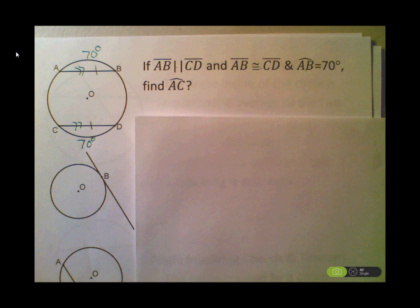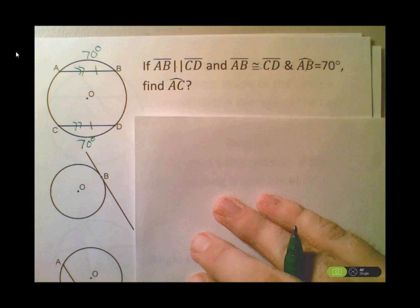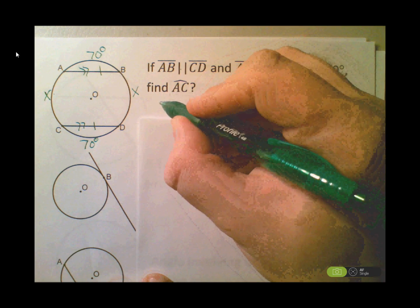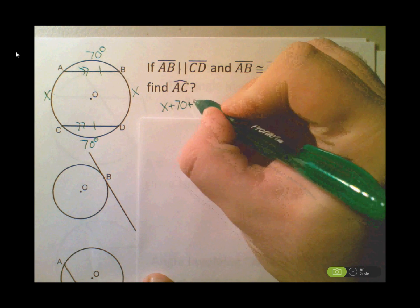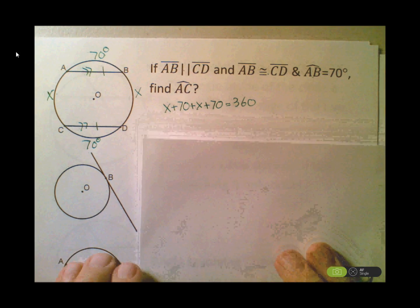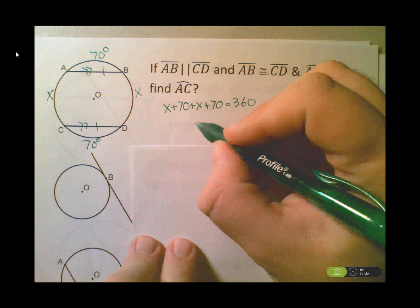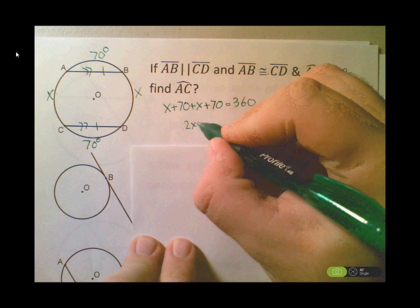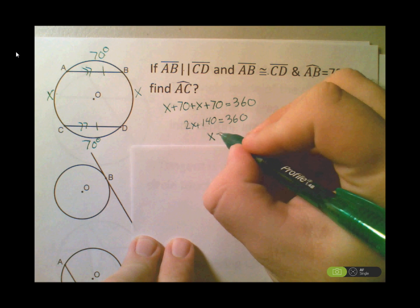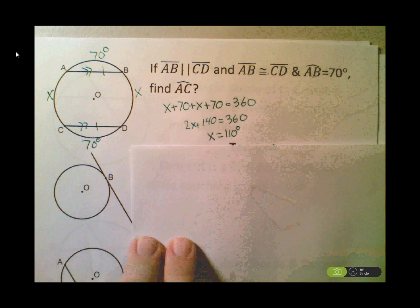If those arcs are both 70 degrees, I want to find arc AC, so I put x there. Because of the parallel lines, arc BD is also x. Adding up all arcs and setting equal to 360 degrees: 2x + 140 = 360, and x = 110 degrees. So arc AC equals 110 degrees.